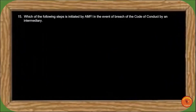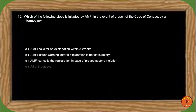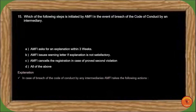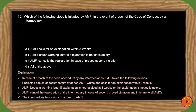Next question: Which step is initiated by AMFI in the event of a breach of the code of conduct by an intermediary? If an intermediary breaches the code of conduct, AMFI writes to the intermediary enclosing documentary evidence and seeks an explanation within 3 weeks. AMFI sends a warning letter if no explanation is received in 3 weeks or the explanation is not satisfactory. AMFI cancels the registration of the intermediary in case of a second proven violation. So the correct answer is option D, all of the above.